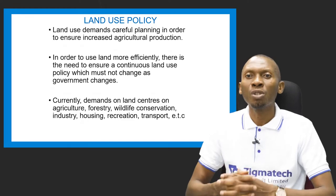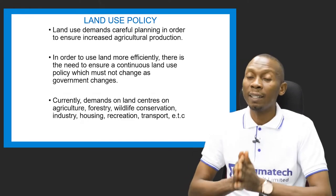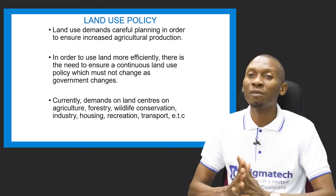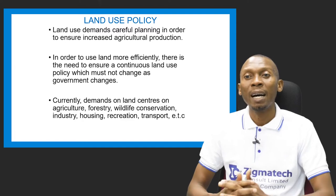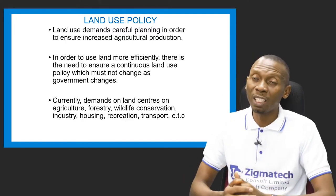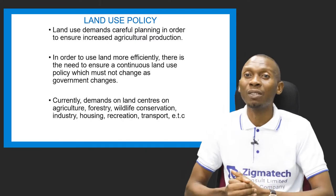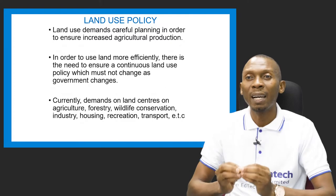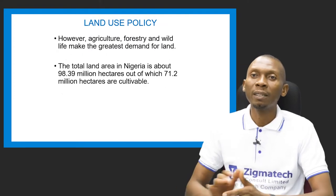This land use policy should not change as the government changes. There is a lot of demand on land for agriculture, forestry, wildlife conservation, industry, housing, recreation, transport, and more. It is important for the government to ensure that an efficient land use policy is in place.